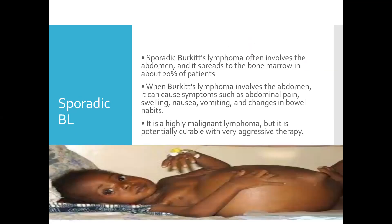Sporadic Burkitt's lymphoma often involves the abdomen and it spreads to the bone marrow in about 20 percent of patients. When Burkitt's lymphoma involves the abdomen, it can cause symptoms such as abdominal pain, swelling, nausea, vomiting, and changes in bowel habit. It's a highly malignant lymphoma, but it is potentially curable with very aggressive therapy. Sporadic type mainly involves the abdomen.